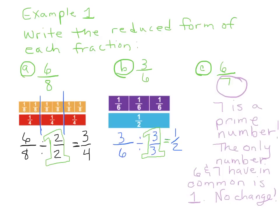For example one, write the reduced form of each fraction. We have six-eighths, three-sixths, and six-sevenths. Taking a look at six-eighths: if we divide six-eighths by two over two, because two will evenly go into six and two will evenly go into eight. Three won't, four won't go into both exactly, but two will. So six divided by two gives three, eight divided by two gives four. You can see from this picture that three-fourths equals six-eighths. It's equivalent — that's the reduced form.